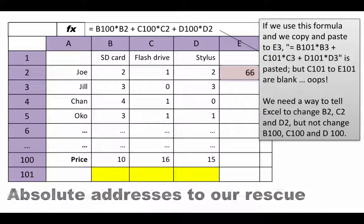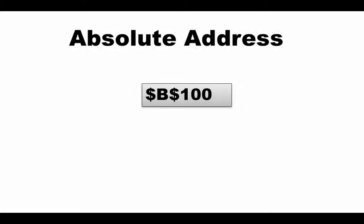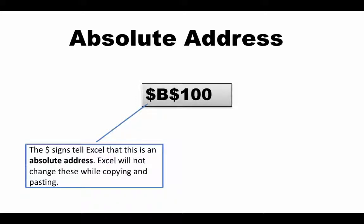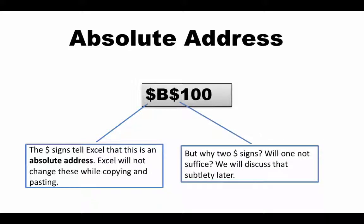Absolute addresses are designed for exactly this kind of scenario. The absolute addresses we'll use are like $B$100 — that's an absolute address. The dollar signs tell Excel this is an absolute address, and Excel will not change these when we copy and paste a formula containing them. In an absolute address, we can specify whether the row is absolute, the column is absolute, or both are absolute. For this lecture, we'll use two dollar signs and continue.